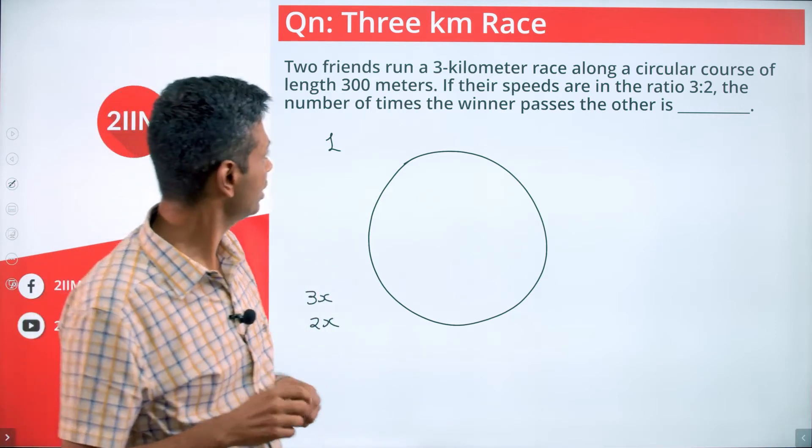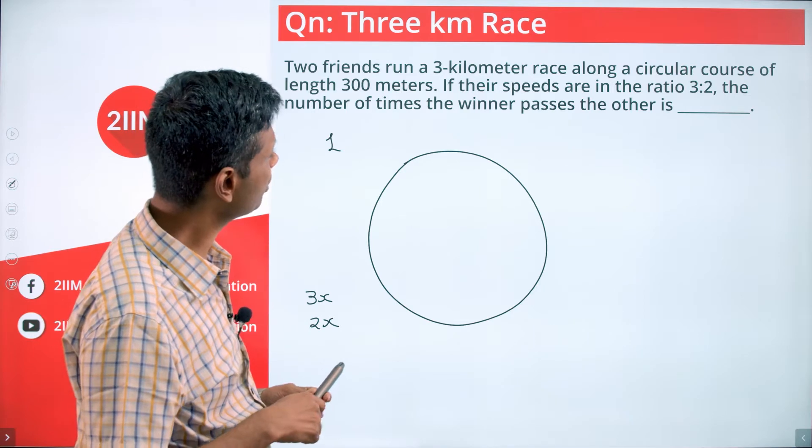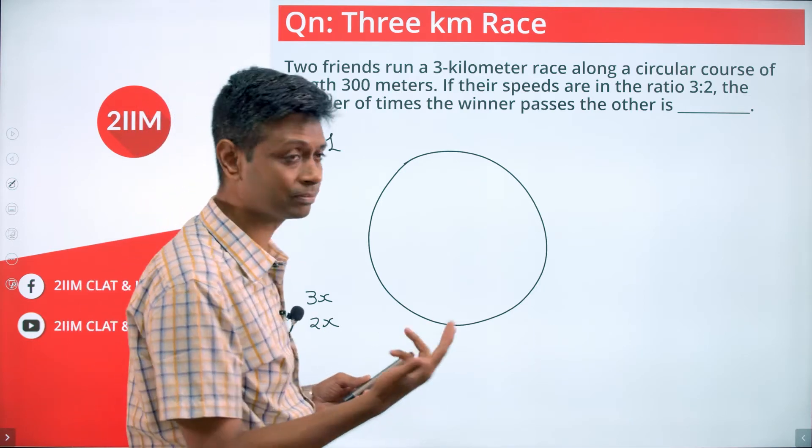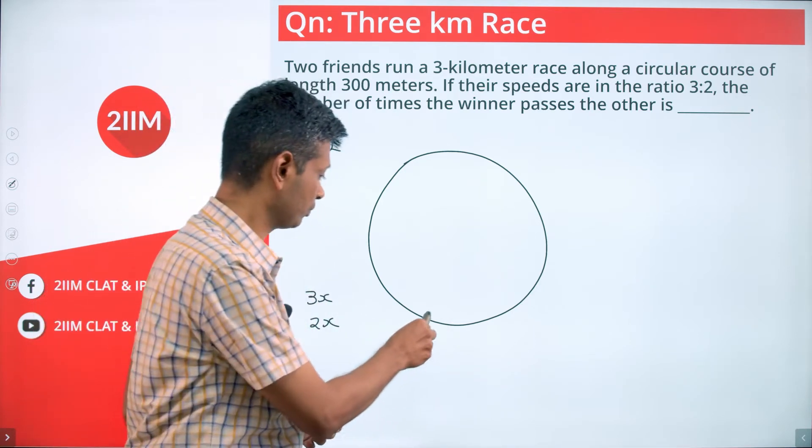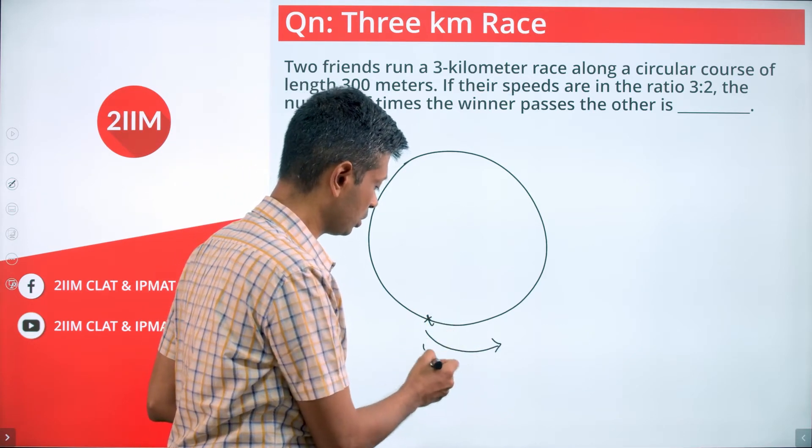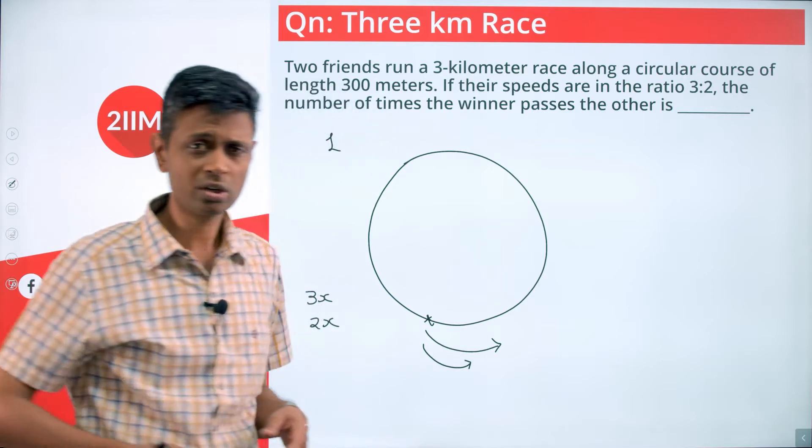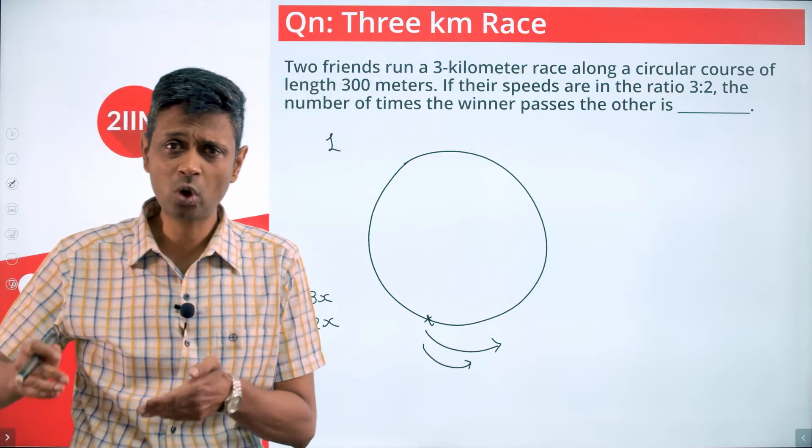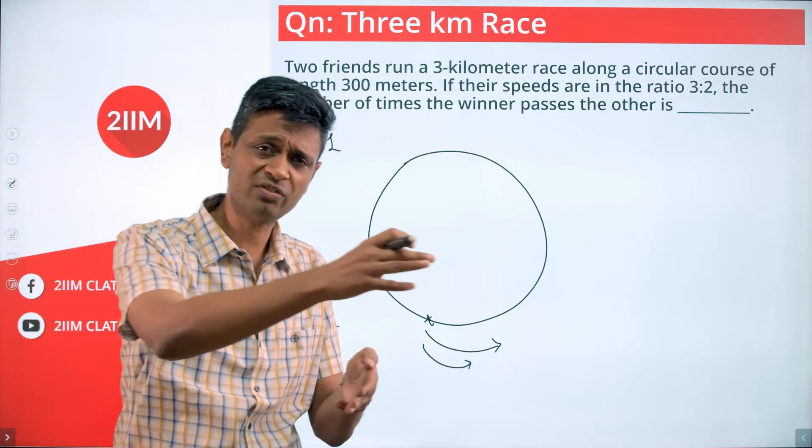Now, the number of times the winner passes the other - so they start somewhere here. The quicker guy goes faster, the slower guy is slower. From the starting point, the quicker guy keeps on getting an advantage. He's going faster and faster and faster.